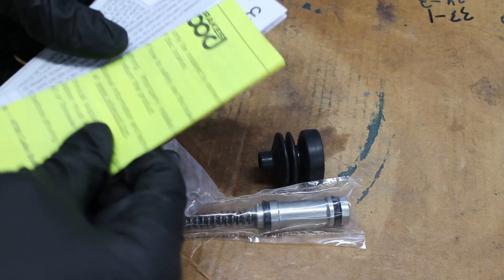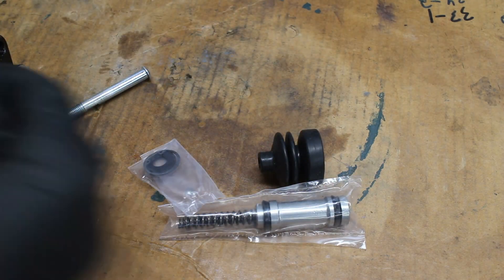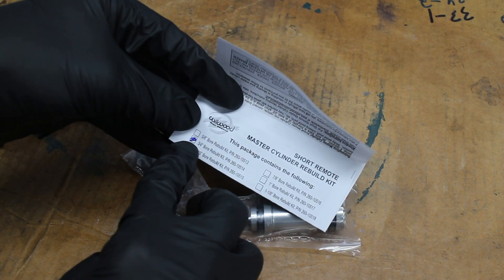Now the rebuild kit. They're about 20 bucks off Wilwood's website. A quick double check to make sure it's the right bore size.